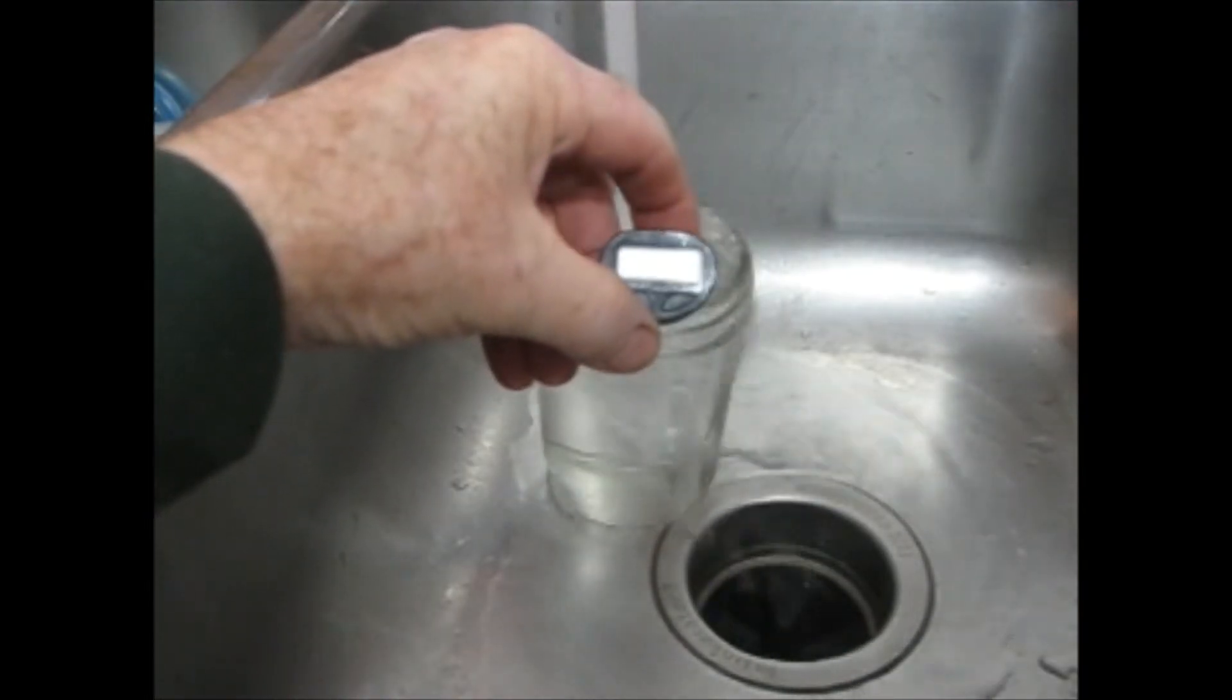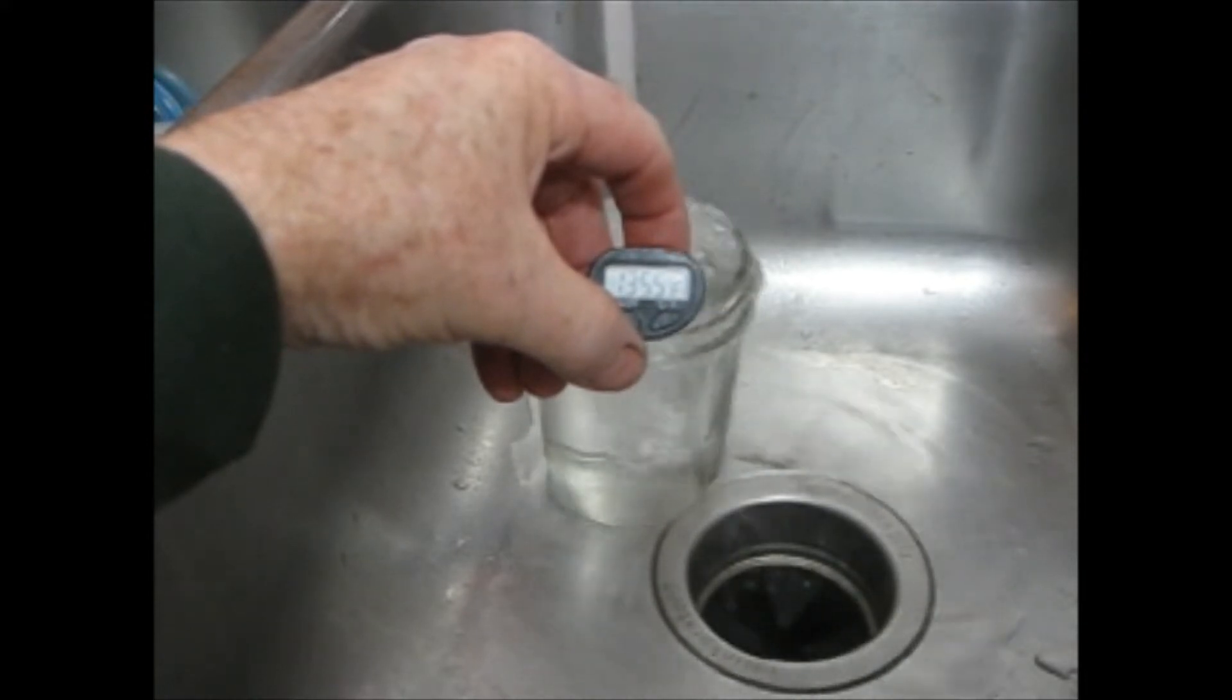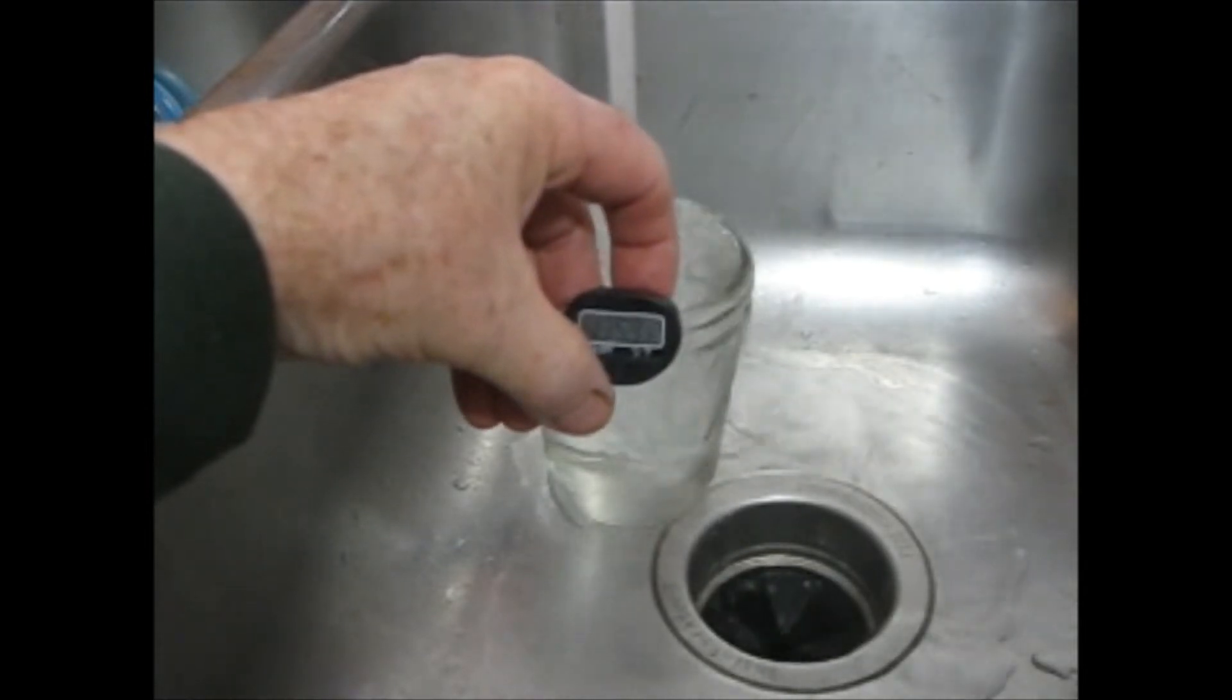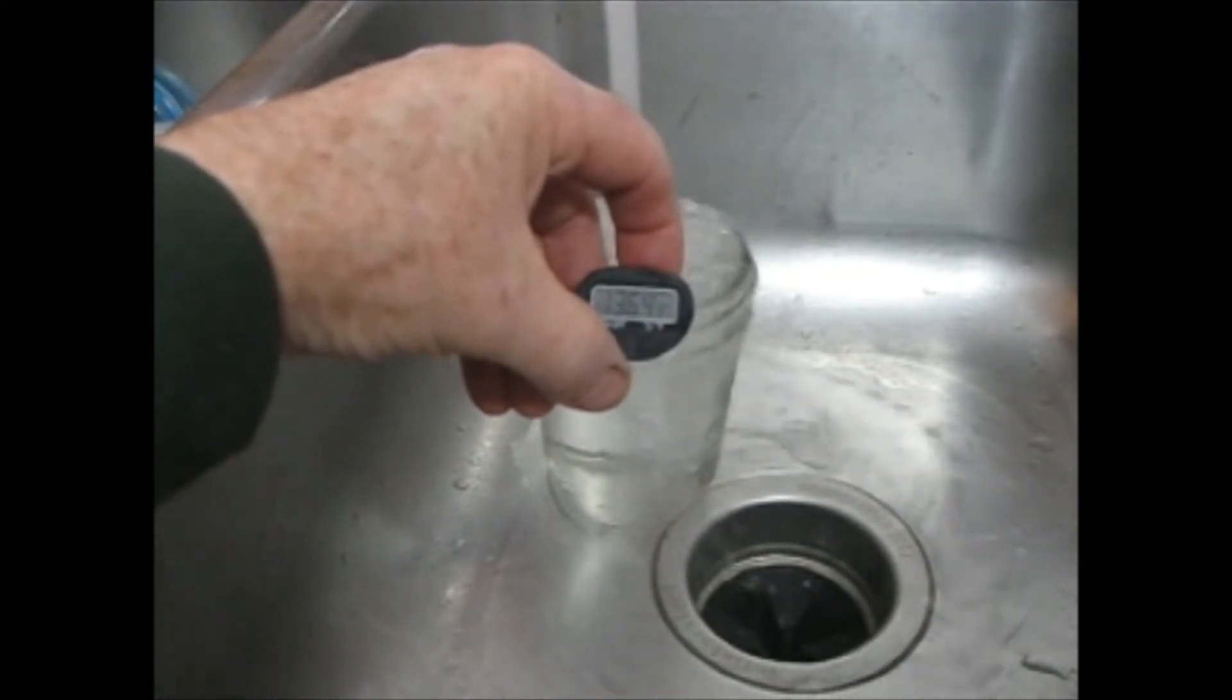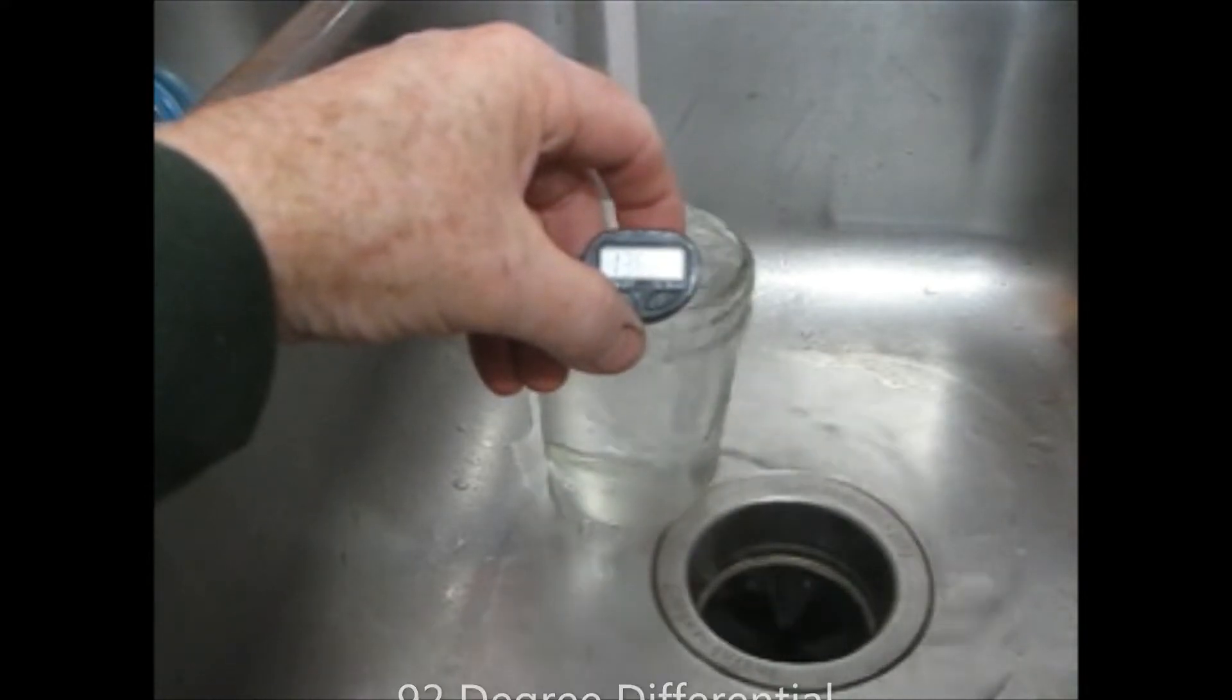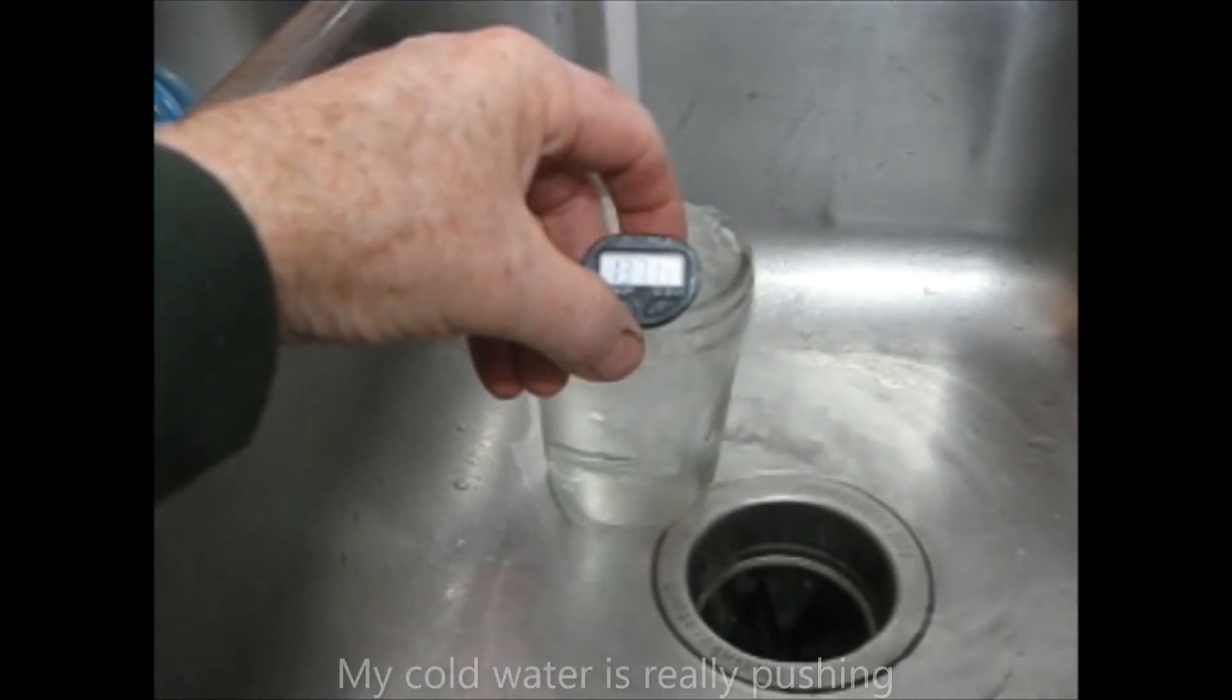Okay so we're at 134, 135 degrees coming out of this faucet. So that's about, considering that my water temperature coming into the house is around 44 degrees, that's 136. So that is a 92 degree increase and this is still slowly inching up. So we're about ready to get to 137.